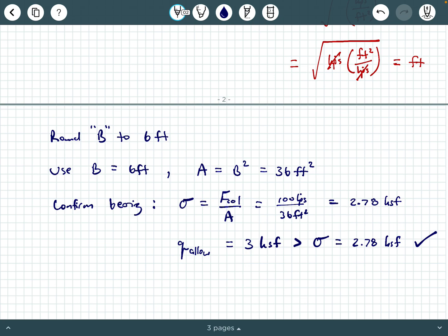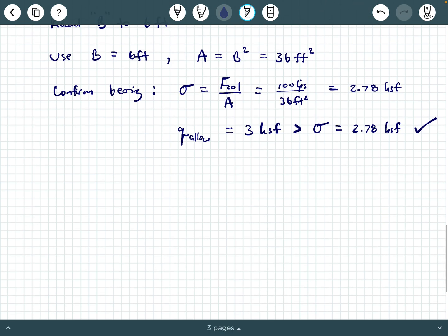And you want to check that your Q allowable, which was given to you as 3,000 psf or 3 ksf is bigger than sigma, which is equal to 2.78 ksf. So you're in good shape. That's a confirmation that your applied bearing pressure when you have rounded up your B value to 6 feet has now been driven less than the allowable bearing capacity of the soil, which is what you want. You want your applied bearing pressure to be less than your allowable bearing capacity of the soil. Otherwise, if your applied bearing pressure is bigger than your allowable bearing capacity, the soil is going to fail. You don't want the soil to fail. You want the allowable bearing capacity of the soil to be bigger than your applied bearing pressure. So we have that.